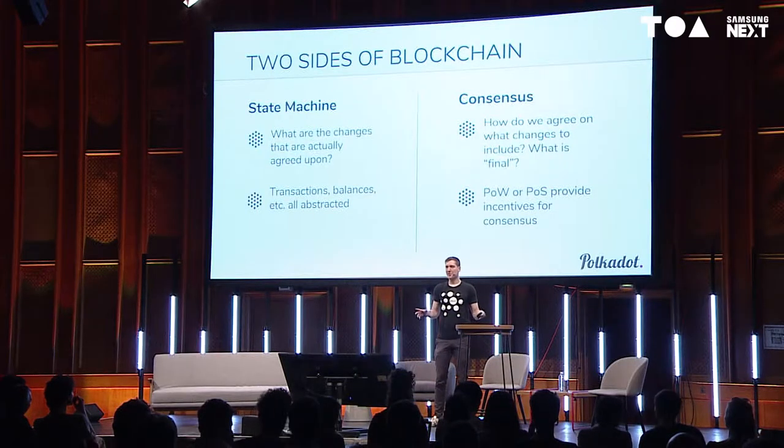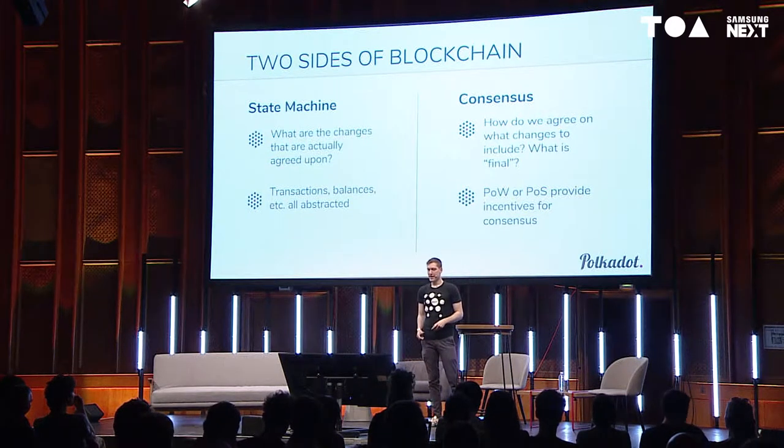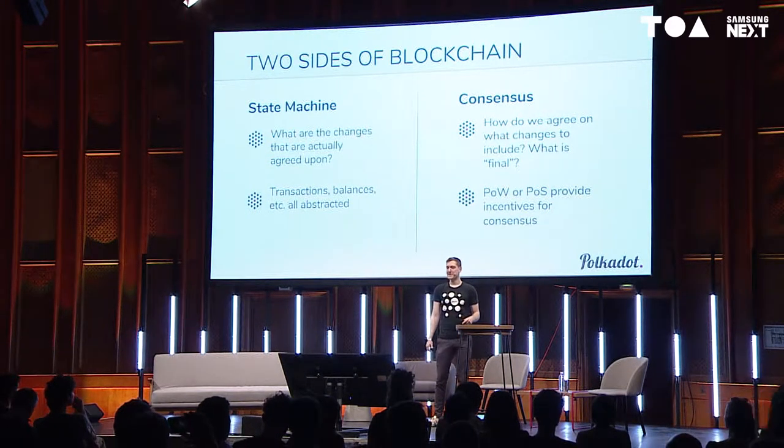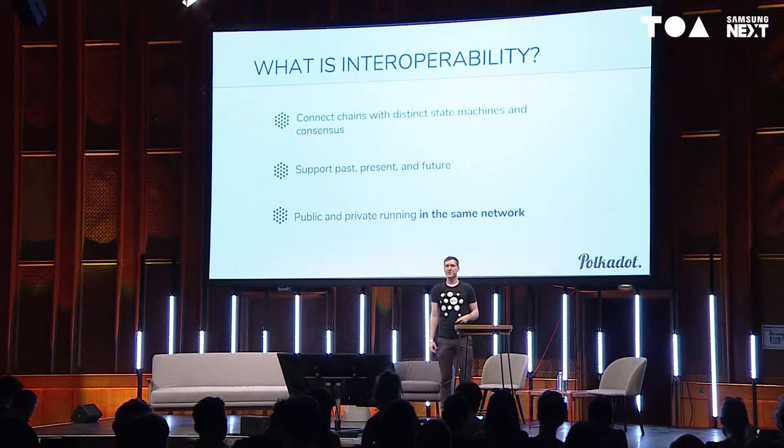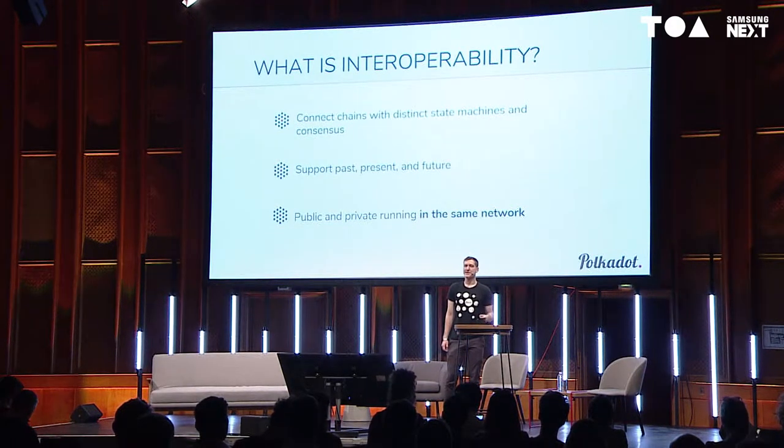Agreement could be between a permissionless or permissioned set — completely decentralized or centralized. You can make a blockchain out of all of those things as long as they fit the properties of a consensus algorithm. One common mistake is thinking that proof of work or proof of stake themselves are consensus systems; they're actually incentive layers on top of consensus systems to make them decentralized and permissionless. So what is interoperability? The goal is to connect blockchains with distinct state machines and consensus.